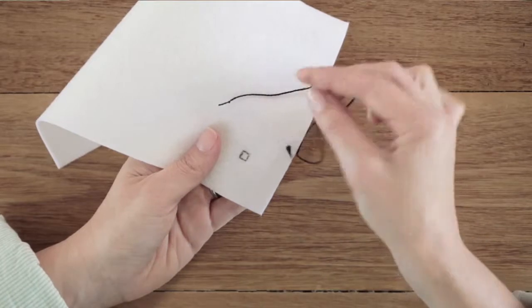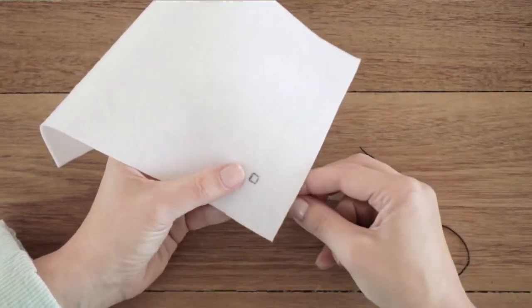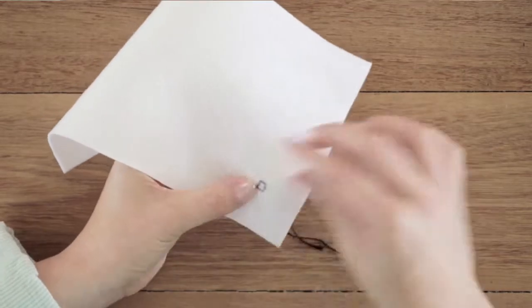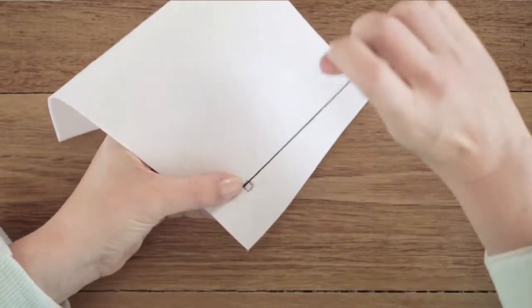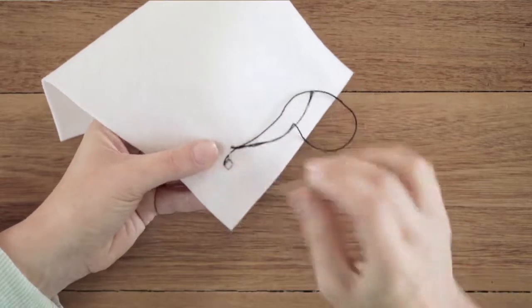We start with our needle and thread. We've got a knot in the end of our embroidery thread. We come up through the fabric and back down on the other side.